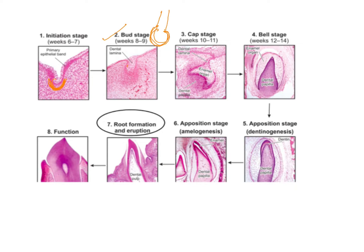After the bud stage you have the cap stage. In the cap stage, the entire structure with the outer and inner enamel epithelium as well as the stellate reticulum present in the center — that entire structure is called the enamel organ. This enamel organ is connected to the oral ectoderm with the help of the dental lamina. After the cap stage it proceeds to form the early bell stage, and after that the advanced bell stage.